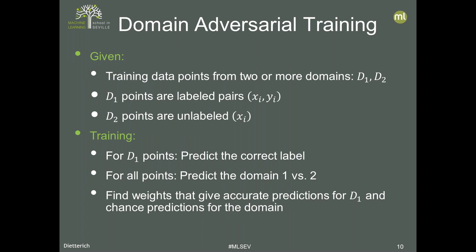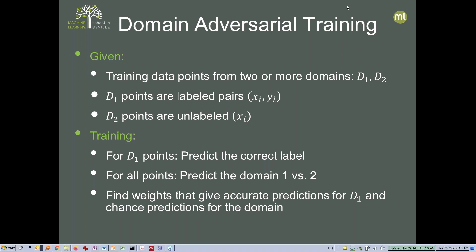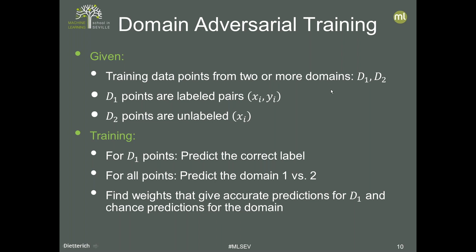The second technique — and it's a little controversial — is domain adversarial training. The idea is that we have training data from two or more domains. If we think about hospitals, we might have labeled training data from hospital D1, where we know patient outcomes, and unlabeled data from hospital D2. We set up a neural network technique to solve two tasks simultaneously: correctly predict outcomes on D1 data, and also distinguish which hospital a data point came from.